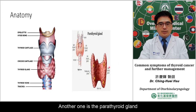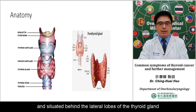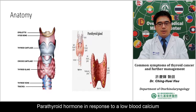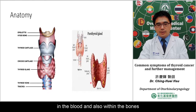Another one is the parathyroid gland. It generally falls in number and is situated behind the lateral lobe of the thyroid gland. The parathyroid hormone responds to low blood calcium. So it plays a key role in regulating the amount of calcium in the blood and also within the bones.